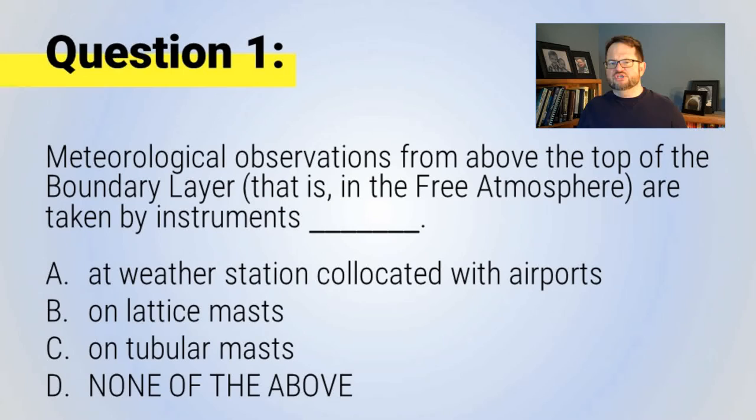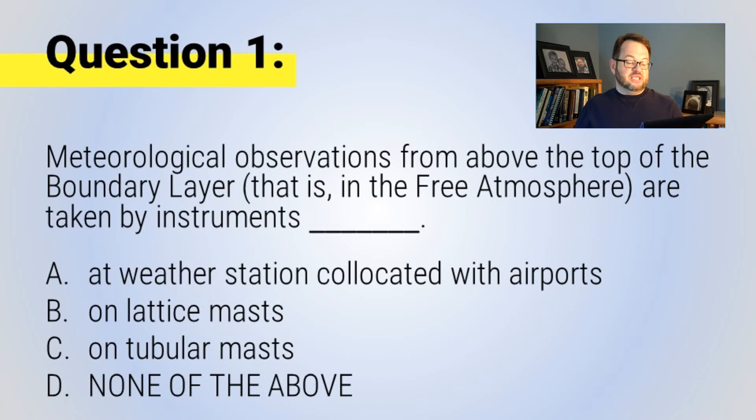Before we move on to part two of this lecture with more in situ observations, here are three quick questions. Question one: meteorological observations from above the top of the boundary layer — that is, in the free atmosphere — are taken by instruments: A, at weather stations co-located with airports; B, on lattice masts; C, on tubular masts; or D, none of the above. Make a choice and get feedback before moving on to question two.